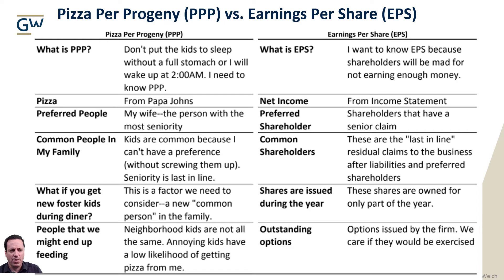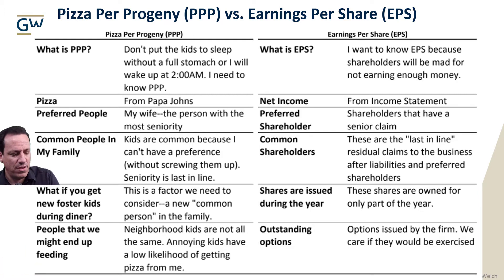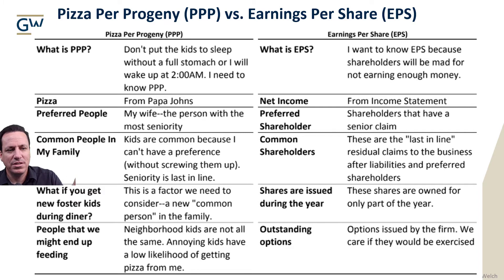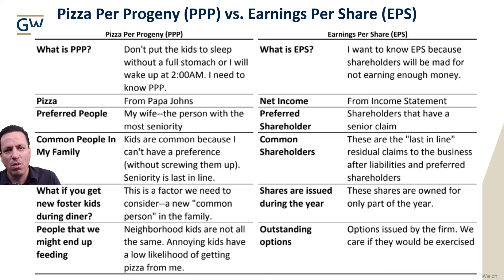I have common people in my family — my kids are common because I can't show preference between them. If you prefer one kid over another, you'll screw them up. They're all equal. The senior person is my wife, and everyone else is last in line. You can't discriminate; all your kids get the same — everybody grab a slice of pizza. Common shareholders are the same too — they all get an equal amount of the earnings allocated to their shares.